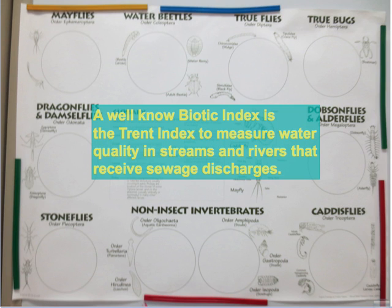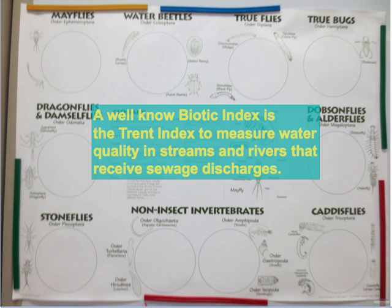Another well-known biotic index is the Trent Index, used to measure water quality in streams and rivers that receive sewage discharges. High levels of certain kinds of invertebrates indicate high levels of sewage or high levels of BOD — biochemical oxygen demand. In the next lesson we will consider the meaning of the term BOD and the use of the Trent Index.